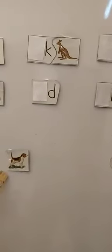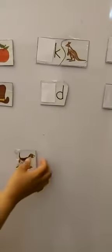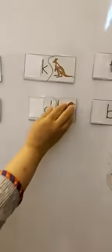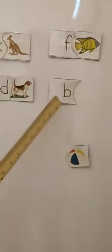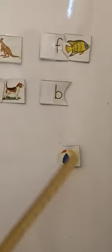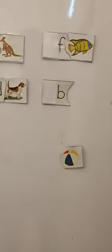Next letter is D. Now only two pictures are left. Quickly, quickly tell me. Yes, you are right — D, Dog! Wow. Bravo! Now the last letter and the last picture. B — Ball. Wow! Clapping, clapping, clapping!